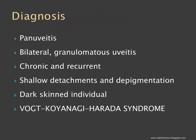So what does this patient have? It is pan-uveitis — bilateral, granulomatous, with chronic recurrence. Narrowing down further: exudative detachment with depigmentation in a dark-skinned individual leads us to the diagnosis of VKH (Vogt-Koyanagi-Harada) syndrome.